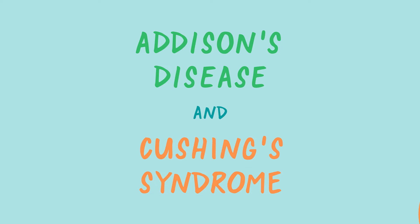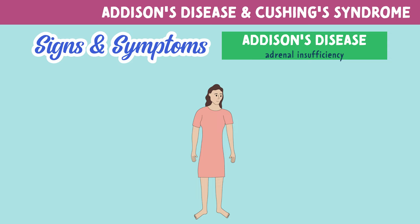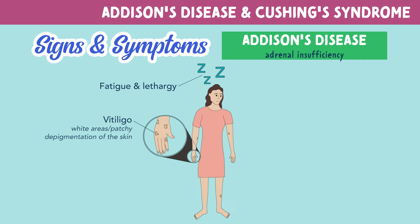Patients with Addison's disease, which is also called adrenal insufficiency, may present with fatigue and lethargy. Vitiligo, which is white areas or patchy depigmentation of the skin. You can also see hyperpigmentation of the skin, commonly on the hands.